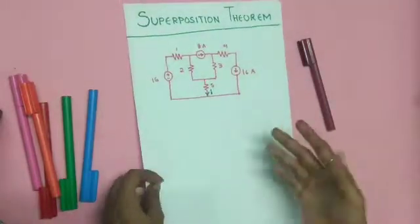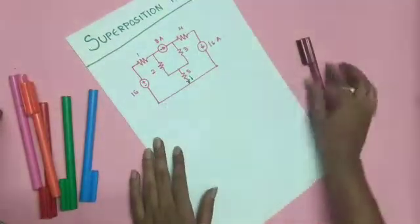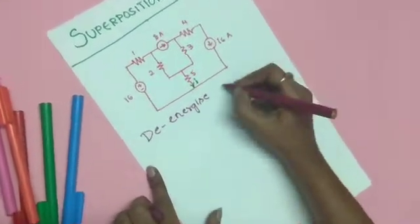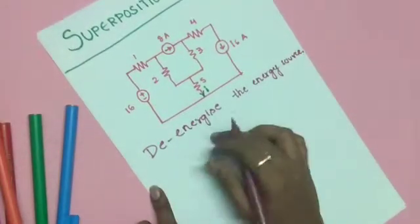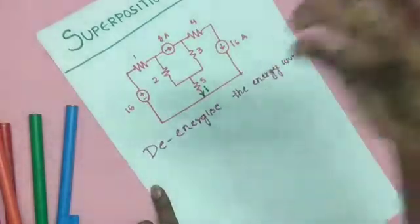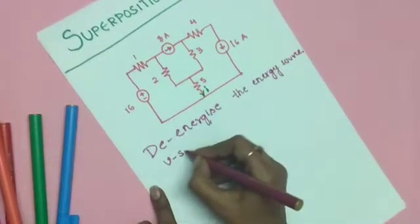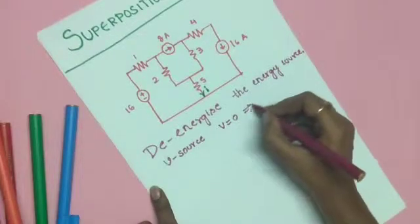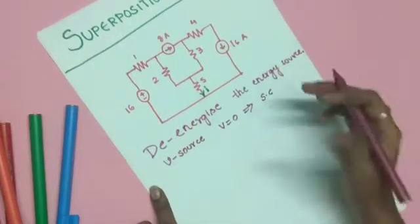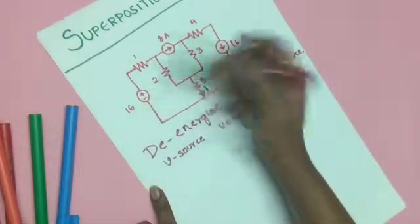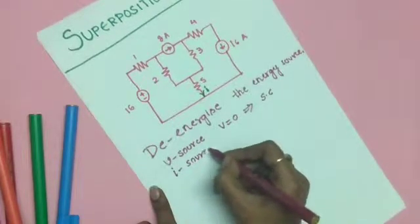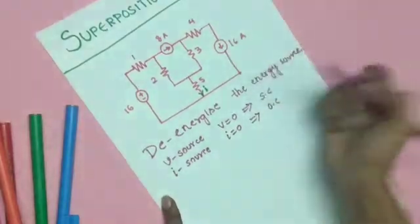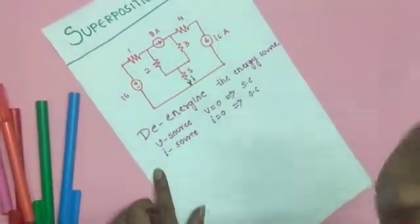Now let us learn how to apply superposition theorem. When considering one energy source, you need to de-energize the remaining sources. De-energizing means making their value zero. For a voltage source, set V = 0, which means short-circuiting that branch. For a current source, set I = 0, which means open-circuiting that branch, since in an open circuit the current is zero.